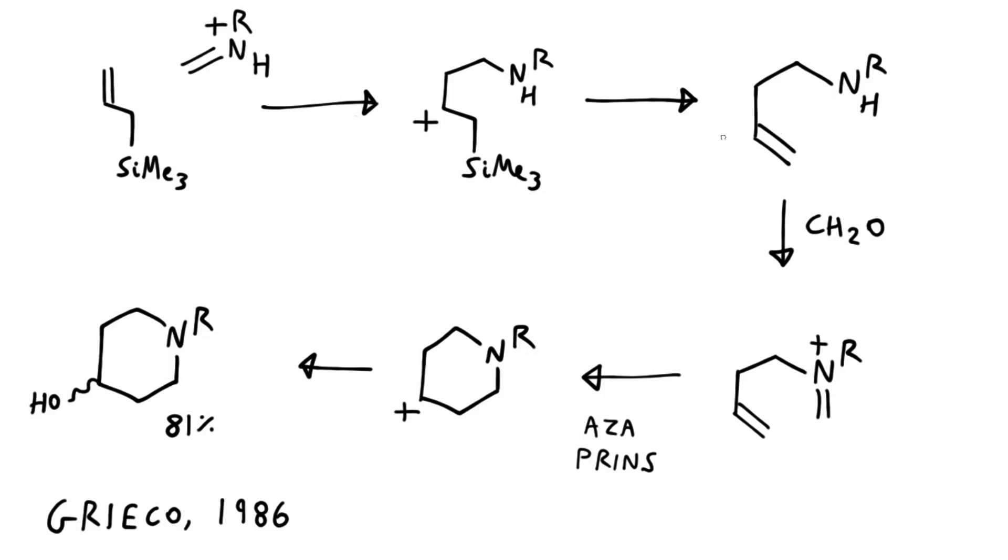If you follow the citations in the paper, this can be traced back to work done by Paul Grieco in 1986. In the reaction he describes, this small, simple molecule here, allyl trimethylsilane, is reacted with a substituted amine, for example, benzylamine and formaldehyde in aqueous solution.